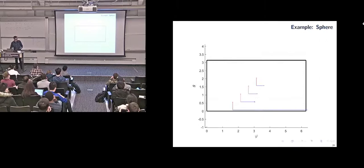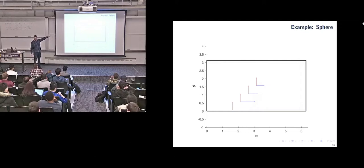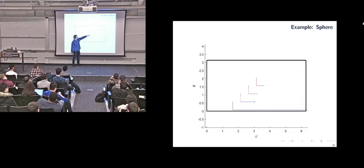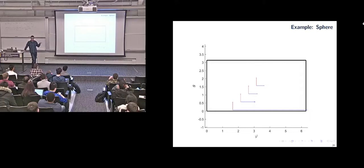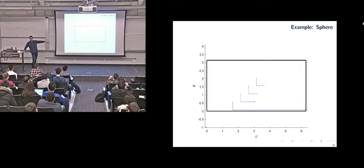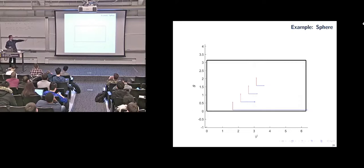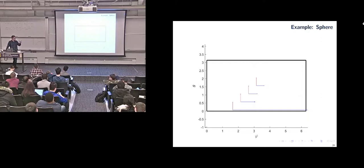As we move around the sphere, the matrix changes and the concept of orthogonal vectors changes too. Each pair of vectors may be orthogonal unit vectors according to the metric, but as the point moves, what it means to be an orthogonal unit vector changes. As we move down to the south pole, the blue line blows up to infinity — and this exactly explains why the south pole gets smeared out to infinity in the Mercator projection. Riemannian geometry captures the fact that the notion of orthogonal unit vectors depends on where you are.